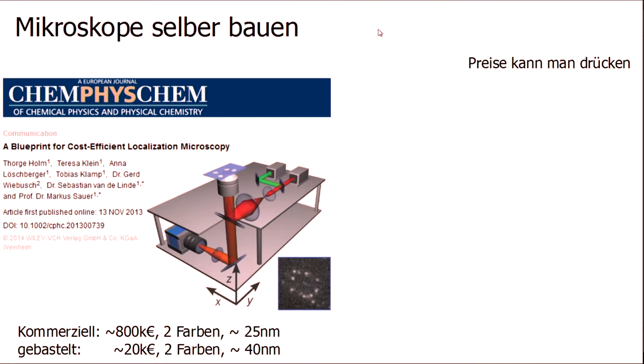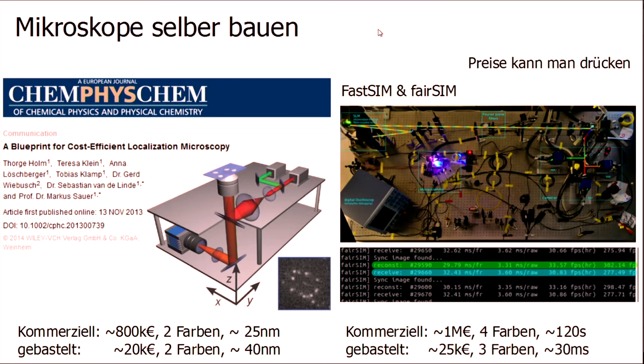So some people thought — hey, let's build it ourselves! There's a blueprint for cost-effective DIY microscopes. Such microscopes as the commercial ones you can buy for €800,000 can do two colors and 25 nanometers resolution. But you can build one for €20,000 with two colors and 40 nanometers resolution. And it's important that we think about this, because universities can offer students access to research tools — and for universities in developing countries, the numbers speak for themselves.